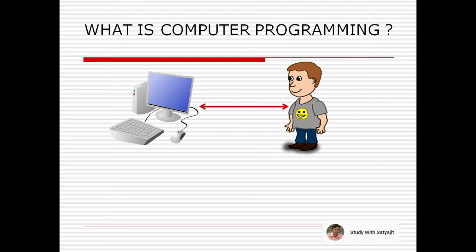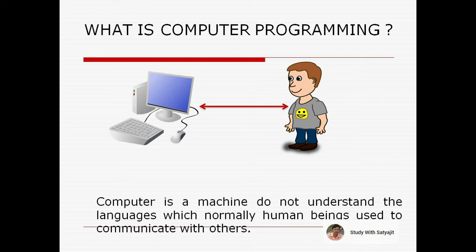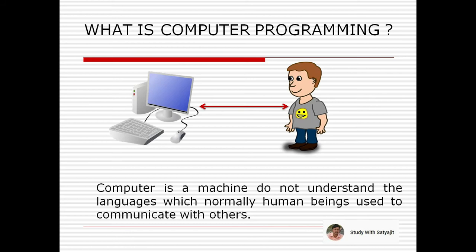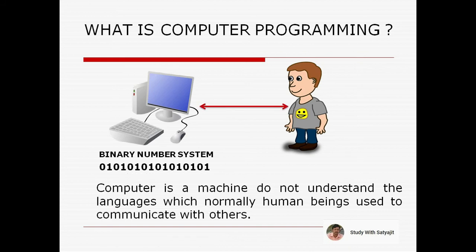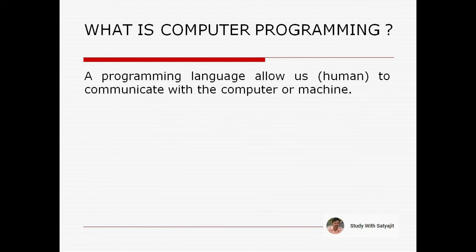A computer is a machine and does not understand the languages which humans normally use to communicate with others. Computers are built using electronic and digital logic circuits that operate on information represented by two-valued electrical signals — that is 0 and 1 — and execute only programs written in binary number systems. That is why programming languages come into the picture. A computer understands all instructions through languages that we call programs, and a programming language allows us to communicate with a computer or machine.